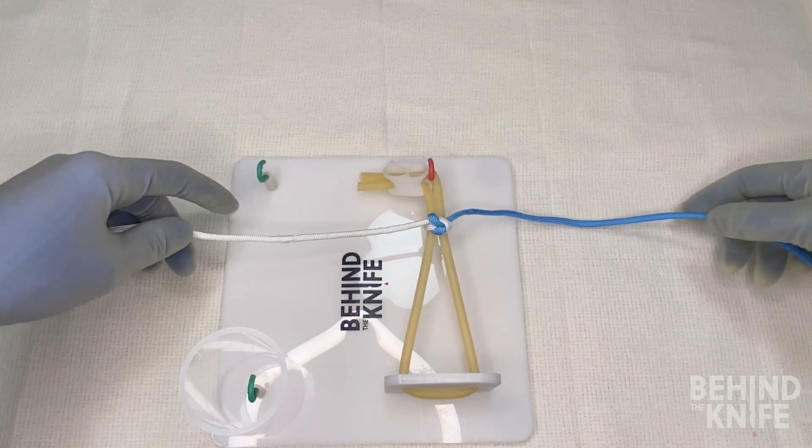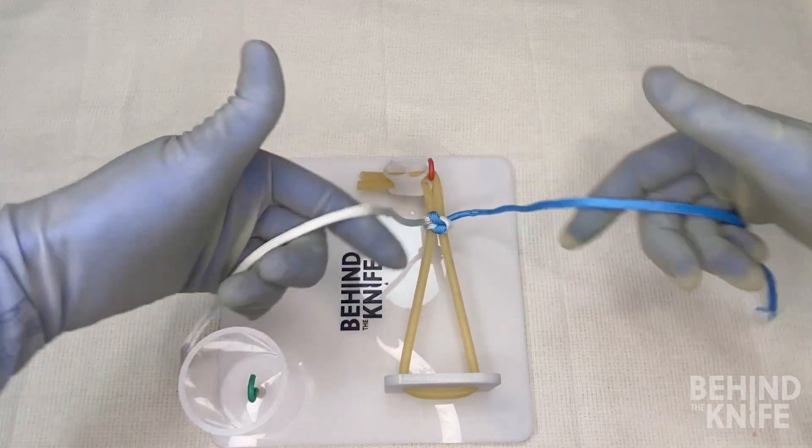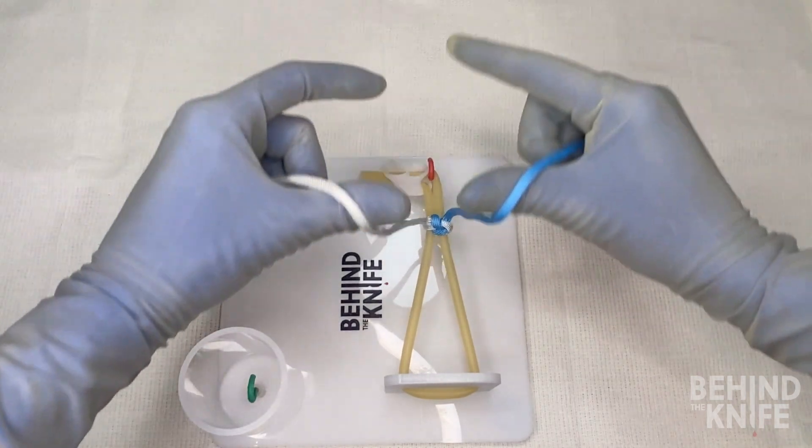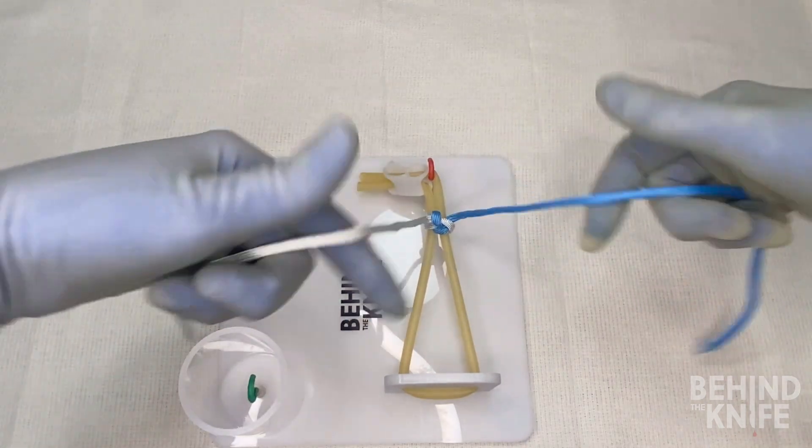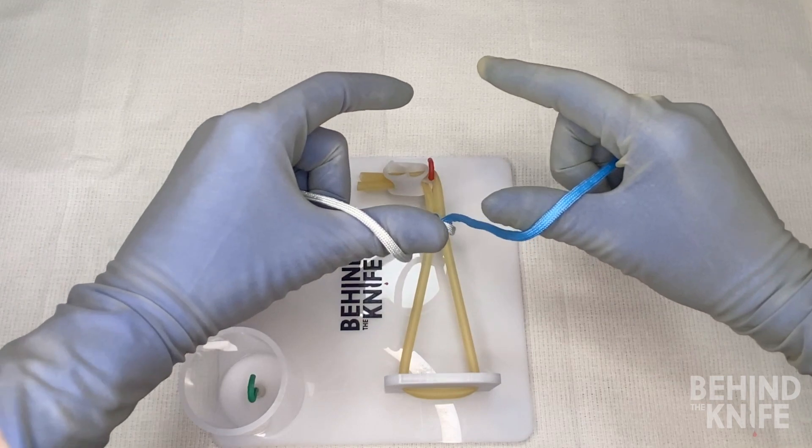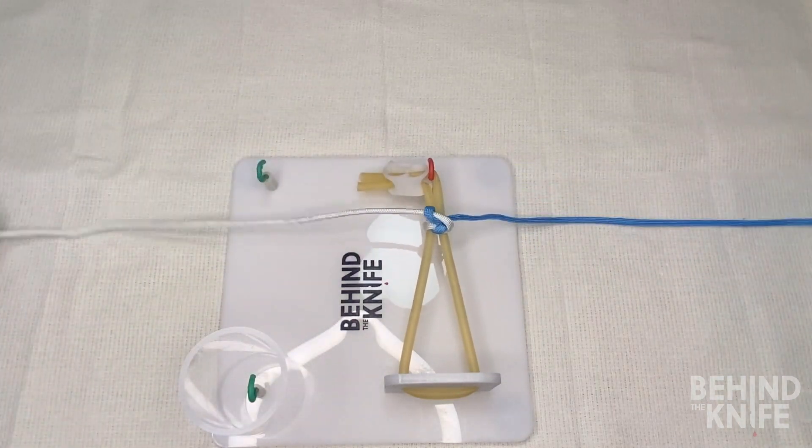To continue this, you'll go back to throwing your next knot using your L's, followed by the C's, alternating back and forth, so that way each time you're laying a nice square knot. And that is how you do a left-handed, two-hand tie.